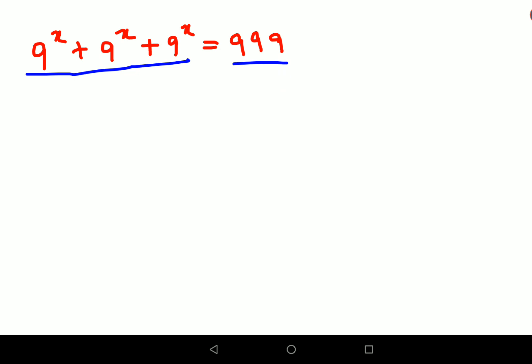So let's do one thing. We will take 9 raised to x common. So you will be left with 1 plus 1 plus 1 that gets you 999.